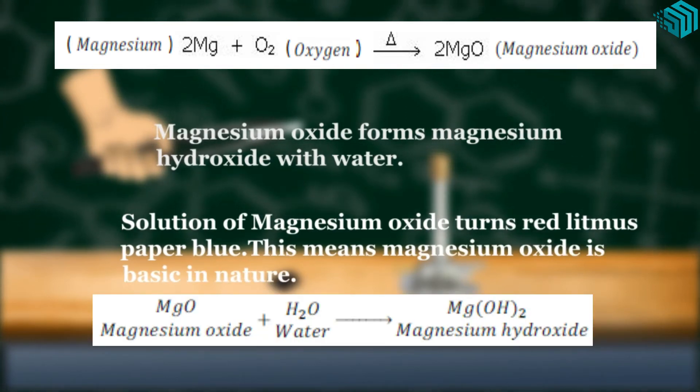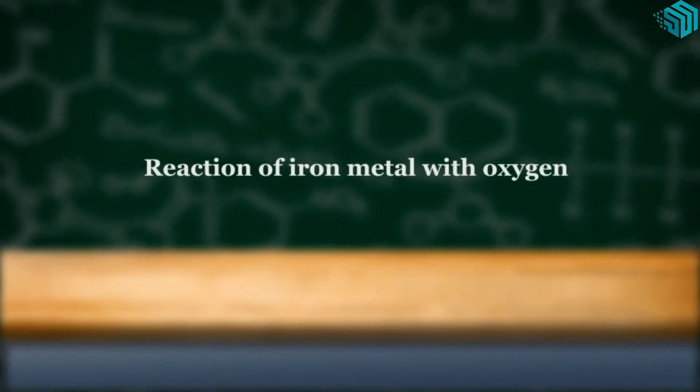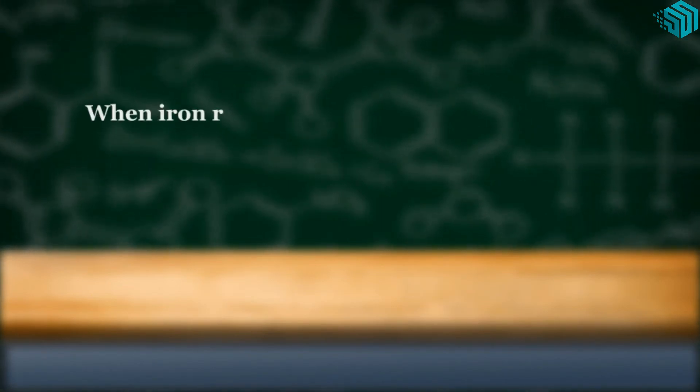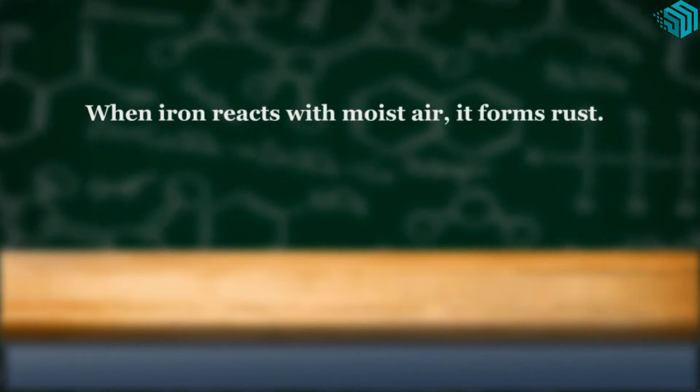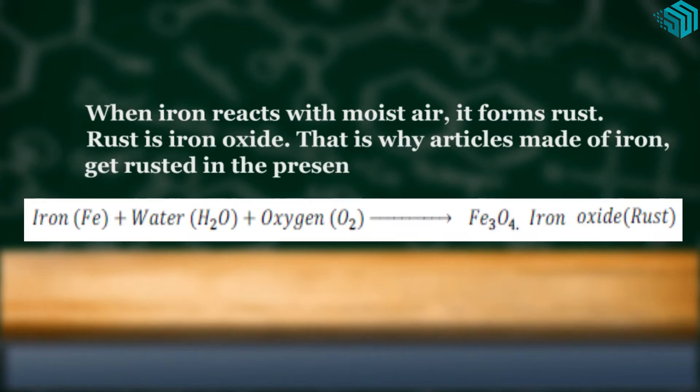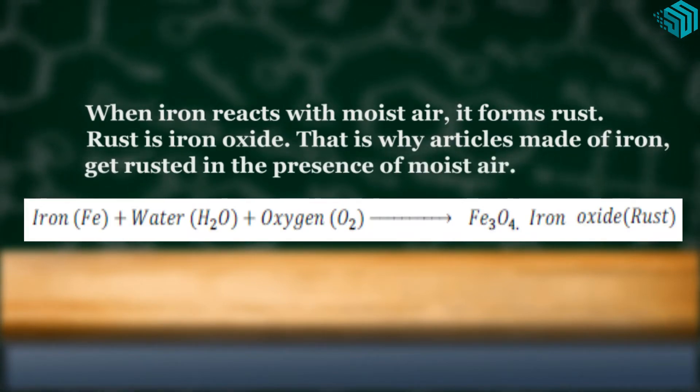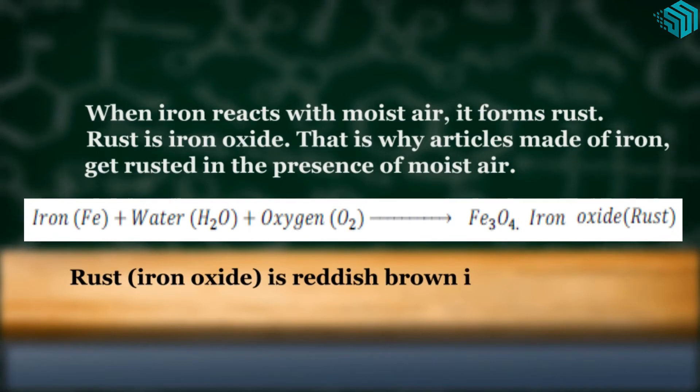Magnesium oxide plus water gives us magnesium hydroxide. Reaction of iron metal with oxygen. When iron reacts with moist air, it forms rust. Rust is iron oxide. This is why articles made of iron get rusted in the presence of moist air. Iron plus water plus oxygen gives us iron oxide, which is also known as rust.